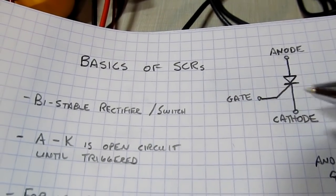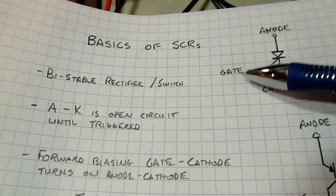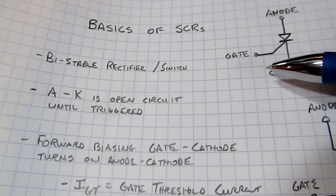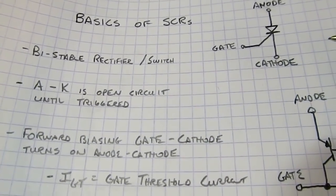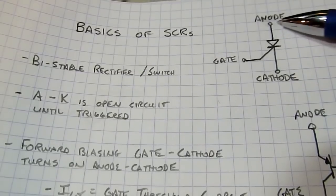And it's triggered by forward biasing the gate-to-cathode junction. And once that's forward biased with a current that exceeds the gate threshold current, then the diode, or the device, turns on.